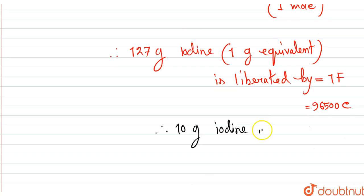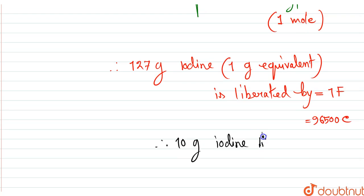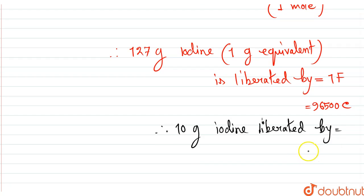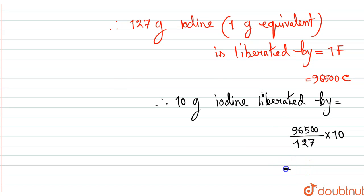Therefore, 10 gram iodine will be liberated by, if we calculate the amount of electricity which will require to liberate 10 gram of iodine, we have to divide 96500 by 127 into 10.